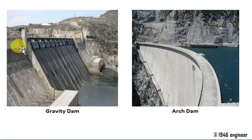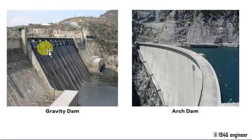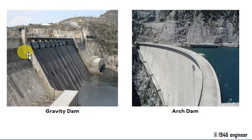Gravity dam — it is a massive concrete or rock fill structure where the weight of the dam itself restricts the horizontal thrust of the water. In a gravity dam, you need to have a strong foundation.